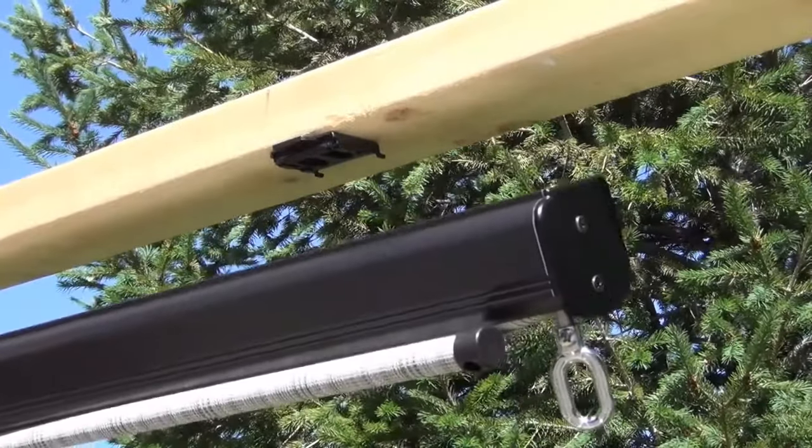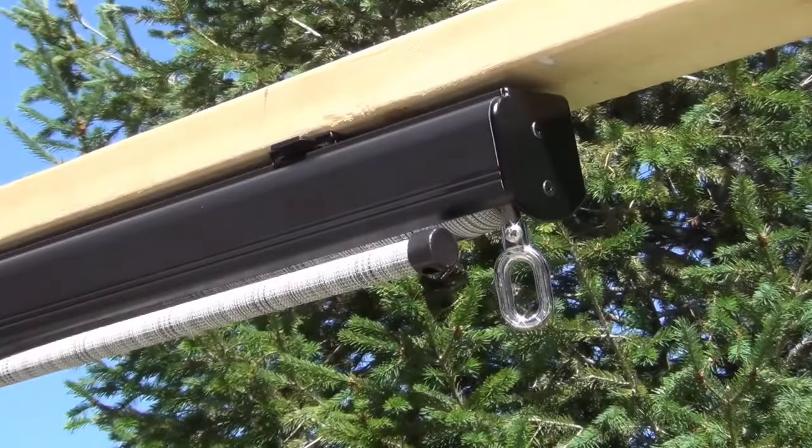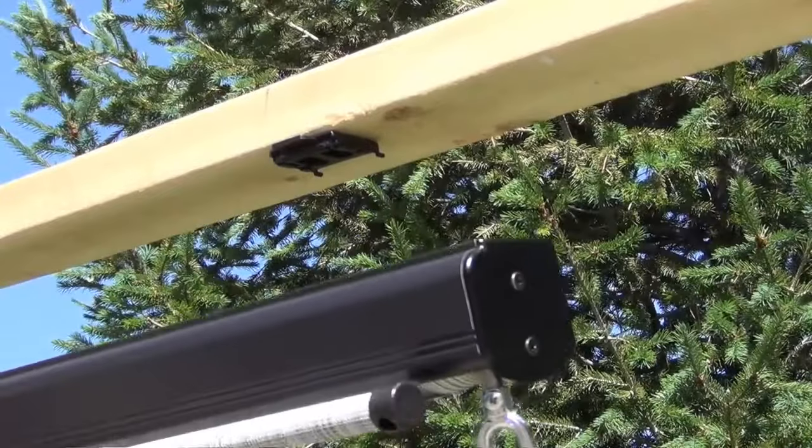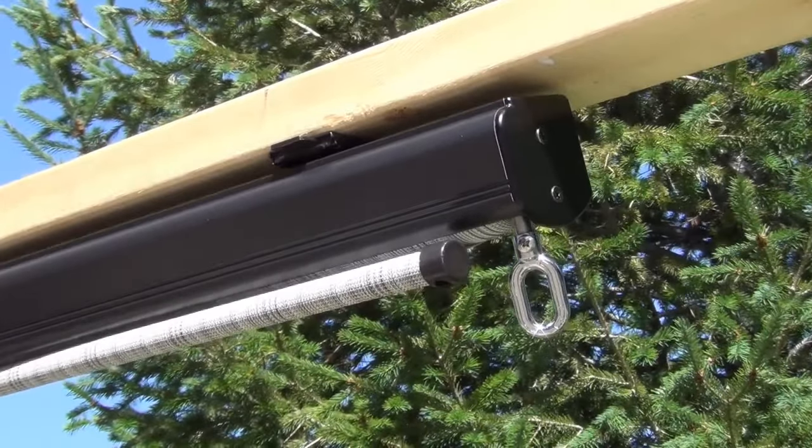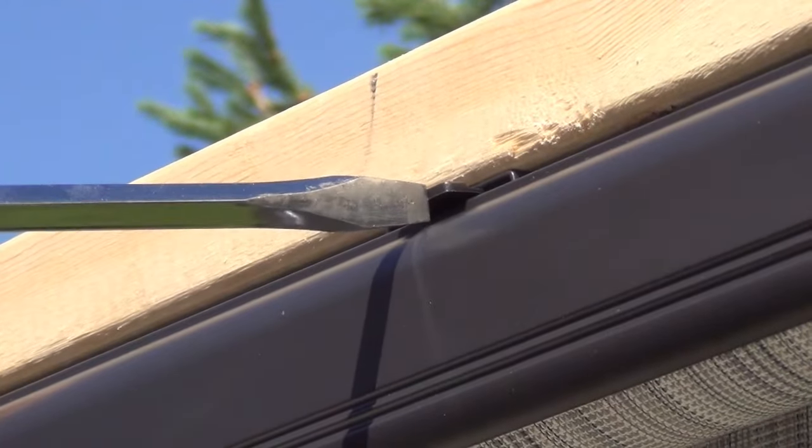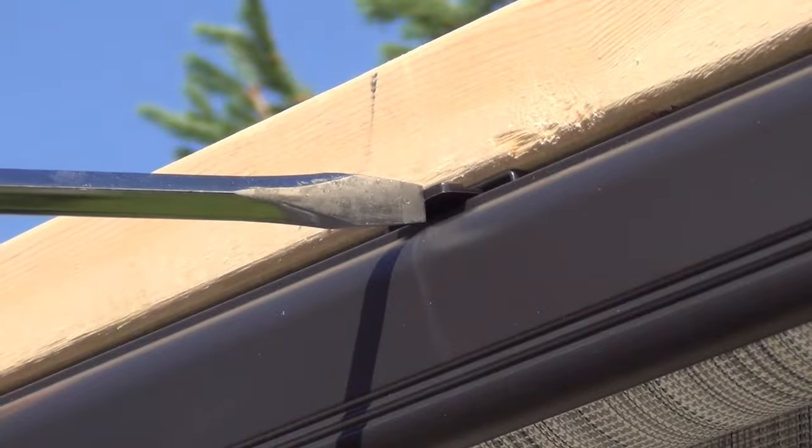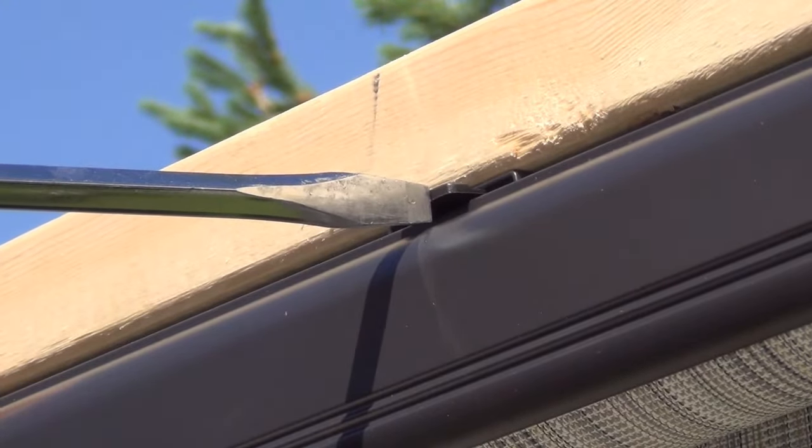For ceiling installations, hook the back of the valence on to the back of the valence brackets. You may need to use your thumb or an object, such as a screwdriver, to click your shade into place.